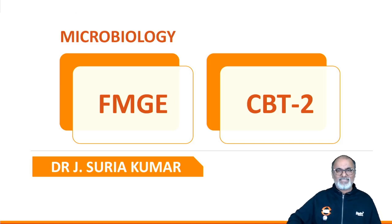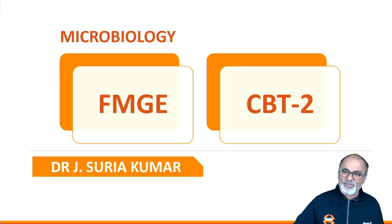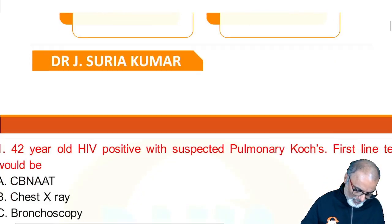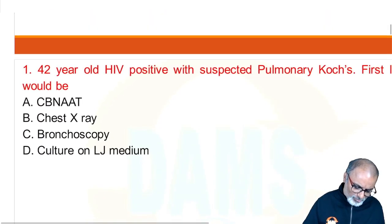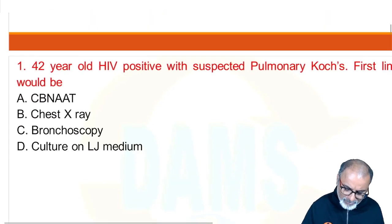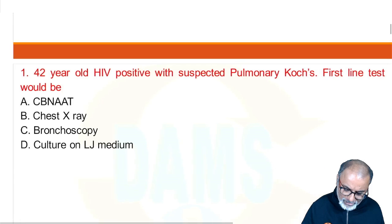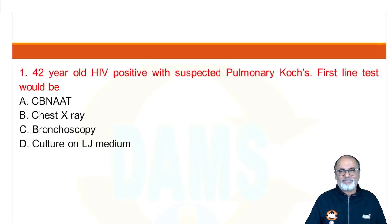Hi, welcome to FMG CBT2 micro discussion. A 48-year-old HIV positive patient with suspected pulmonary TB — the first-line test would be?